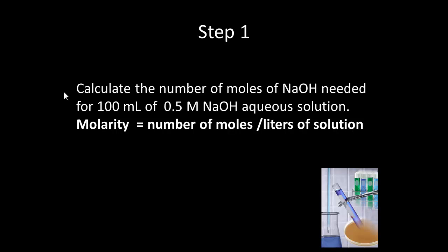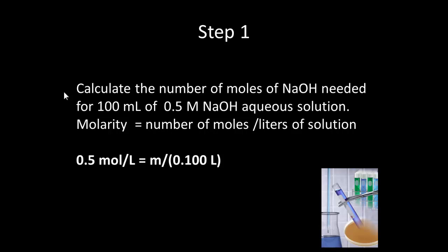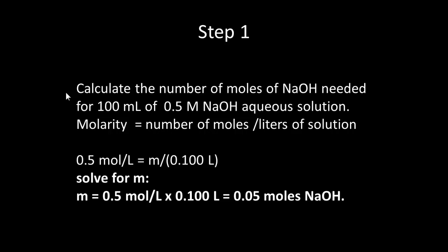Our first step is to calculate the number of moles of NaOH needed for 100 mL of 0.5 molar sodium hydroxide. Molarity is the number of moles divided by the liters of solution. We have 0.5 molar, and 100 mL is 0.1 liters. So the number of moles M equals 0.5 times 0.1, which is 0.05 moles of sodium hydroxide.